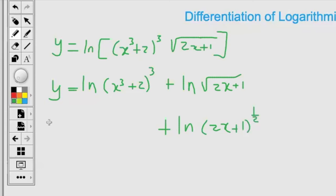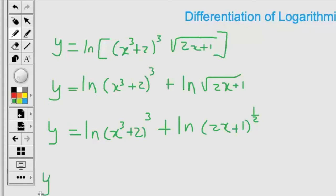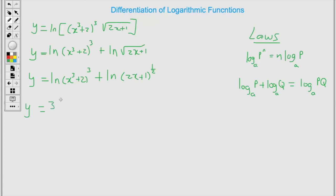Now we apply rule number 1, where when you have a power, we carry the power in front. The powers we have are 3 and 1 half. Carrying these powers in front, what we have is 3 times ln of x cubed plus 2. Then the next part is carrying the half in front of the natural log, so we have 1 half times ln of x cubed plus 1.